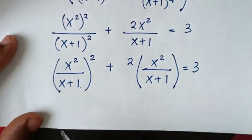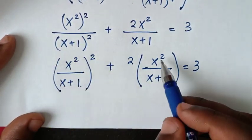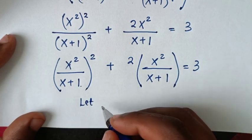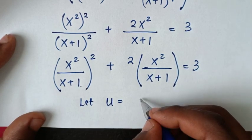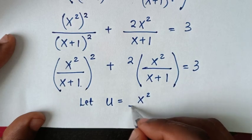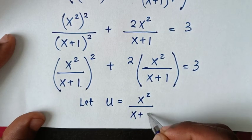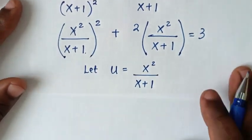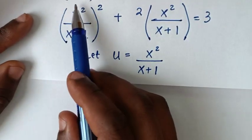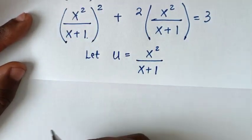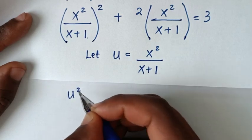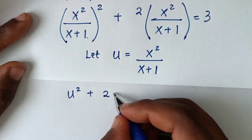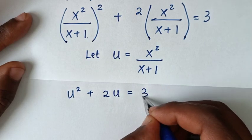Now x²/(x+1) is common throughout, so we let u = x²/(x+1). Then the equation becomes u² + 2u = 3.